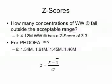Z-scores are used when there is a large sample size and random testing of a product. Therefore, we have calculated the z-scores of each product to see what batches of WW and PHDOFA fall outside the acceptable range, evaluated using the formula in the bottom of the screen.